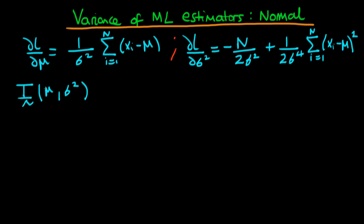We actually discussed how we don't normally know mu and sigma squared, so what we actually do is we estimate the information matrix using our estimators for mu and sigma squared, which we write as mu hat and sigma squared hat. We spoke about how this matrix has four different components.